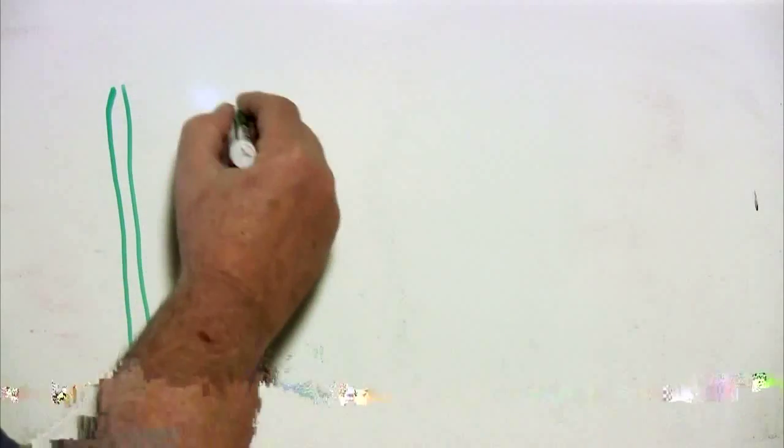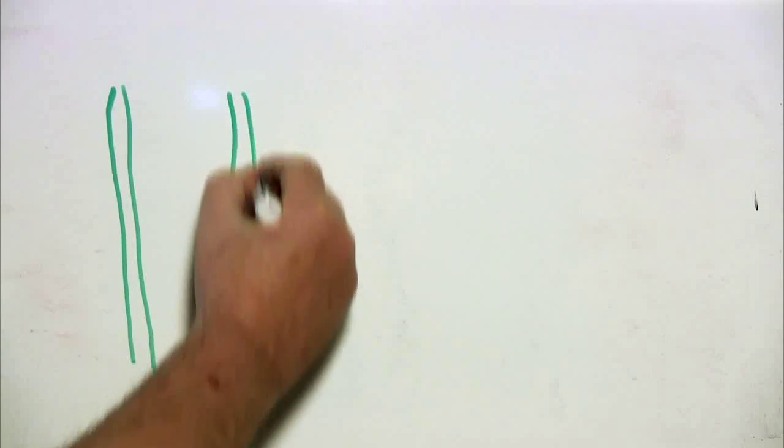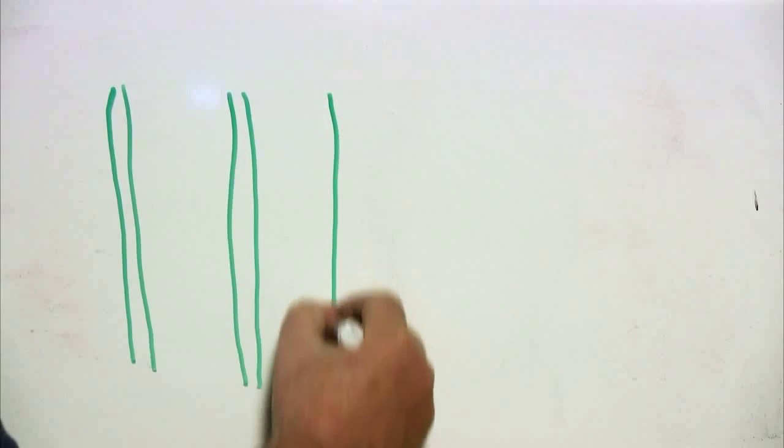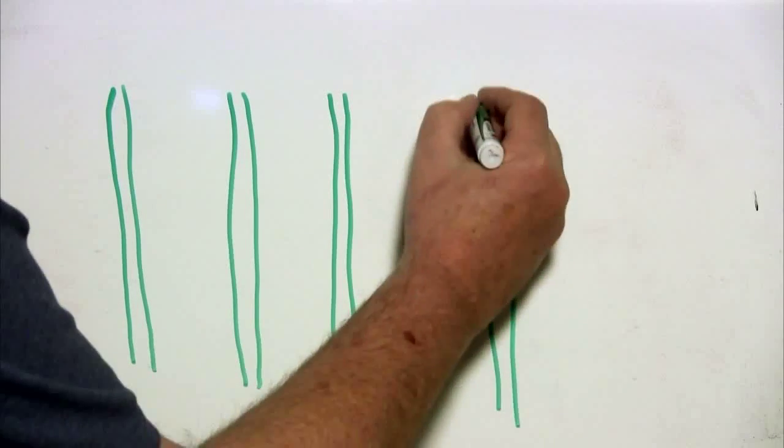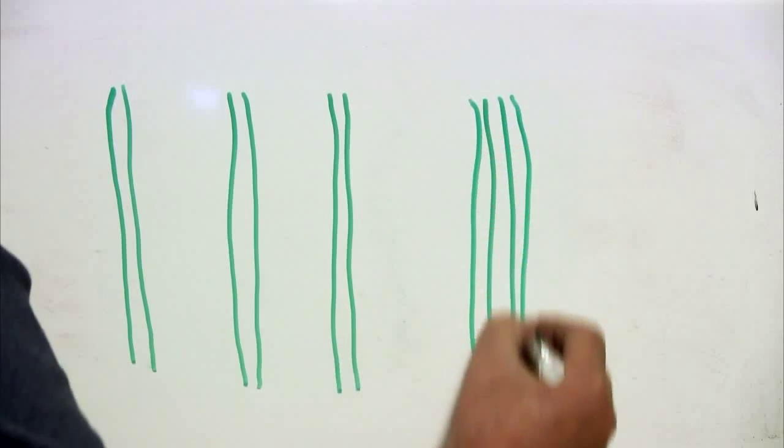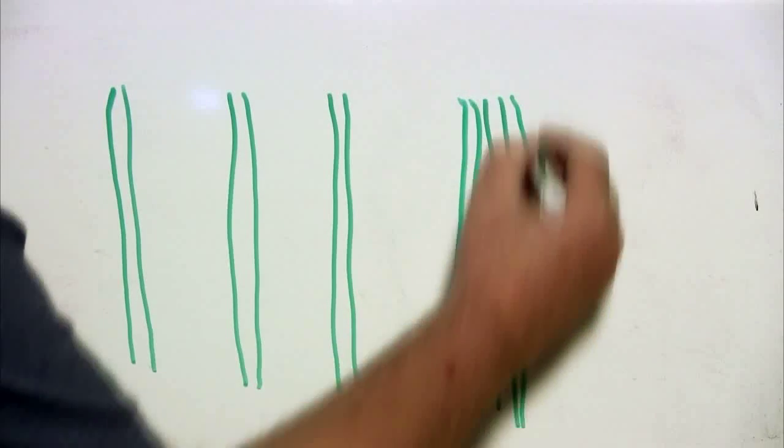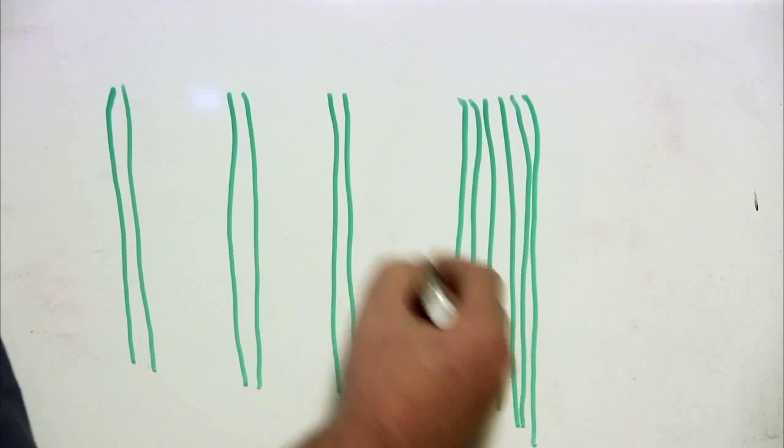This is what the band looks like when you see multiple PSK signals. Ideally, you should just see two vertical lines close together. Those are properly adjusted. The fellow on the end there, he is overdriving his transmitter when he's causing multiple vertical lines. And so you can see his signal is quite a bit wider.